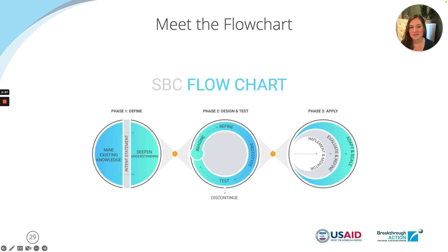The flowchart draws from and incorporates learning strengths and methodologies from five different disciplines: social behavior change communication, design thinking, behavioral science, community development and engagement, and marketing science.